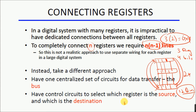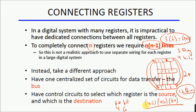Let's say we have a 64-bit system and we have 4 giga registers. To calculate how many lines would be required to connect each register with every other register: 4 giga times 4 giga times 64 — just imagine how many lines that becomes. So this is not a realistic approach to use separate wiring for each register in a large digital system. We have to take a different approach that is practically realizable.